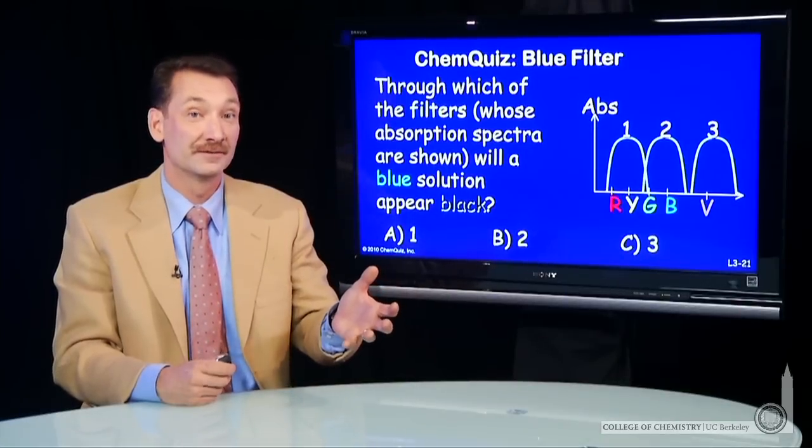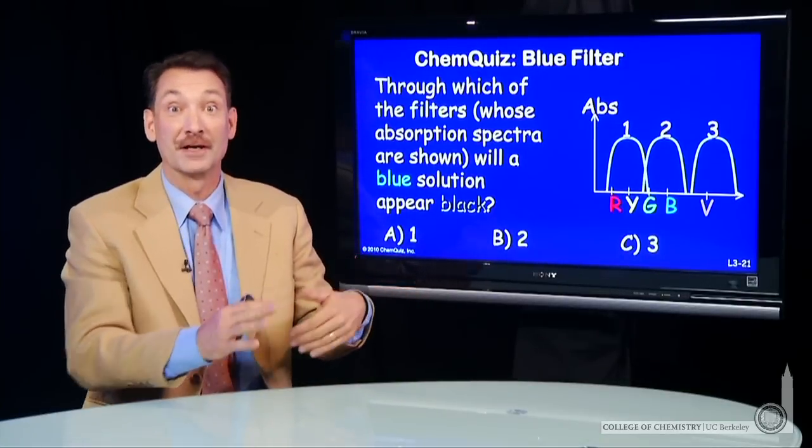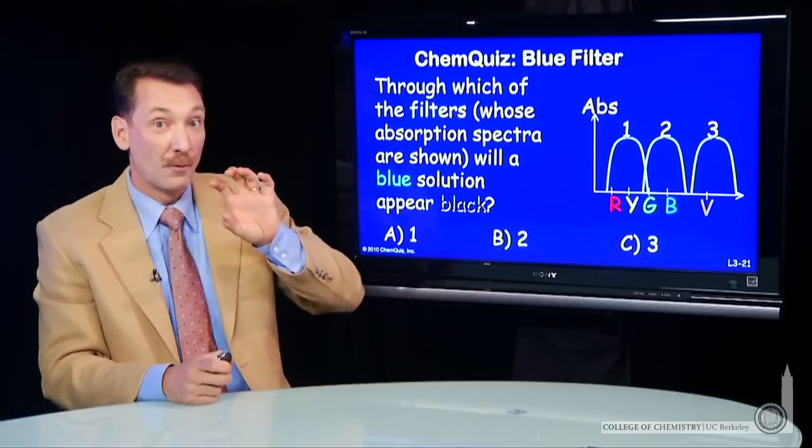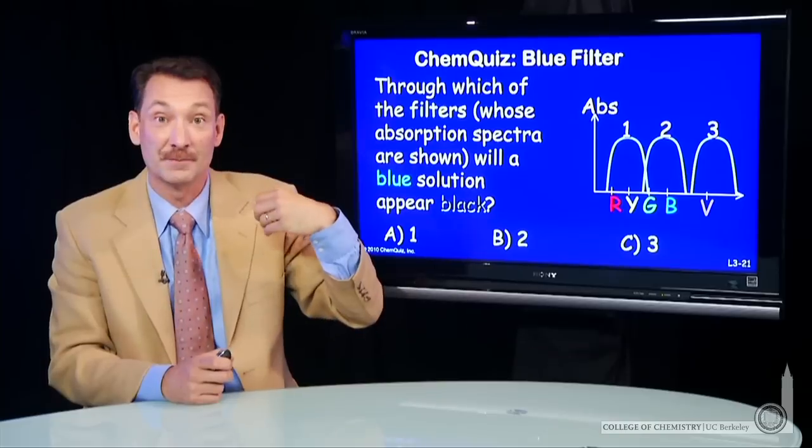So we've got a blue object. We're going to put filters between the blue object and us to see what we see. A blue object emits wavelengths of blue light—that's why it appears blue.